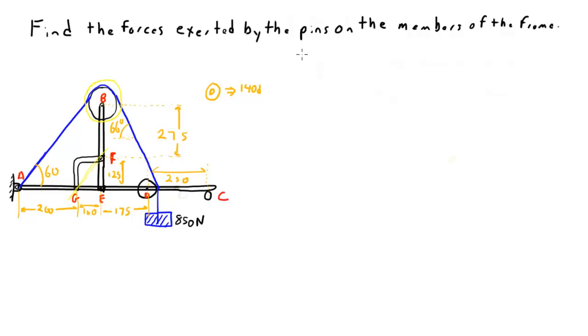So the question is to find the forces exerted by the pins on the members of the frame. So what I want you to recognize, if I were to blow up this point right here. So there's that member that goes from B to E. There's that piece that goes from F over to G. And right in the center is a pin. So if I look right here, there's three things. So this member that goes vertical pushes on the pin.